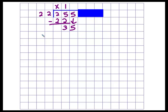Now I repeat those steps again. So now I'm looking at how many times will 22 go into 35. Well, I know that's only going to be one time again. So then I multiply. 1 times 22 is 22, and I subtract. 35 minus 22, well, 5 minus 2 is 3, 3 minus 2 is 1. So I have 13 left over.